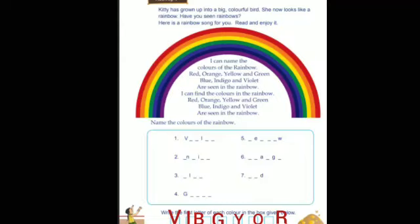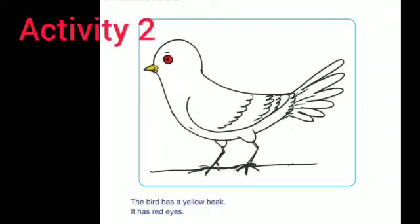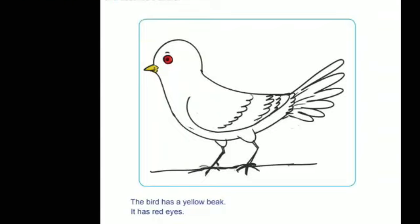Now we can move on to the next activity. Here is the picture of a bird! What you have to do: color the picture with the colors of the rainbow and describe the bird. You like coloring, right? You have to color the bird very nicely.